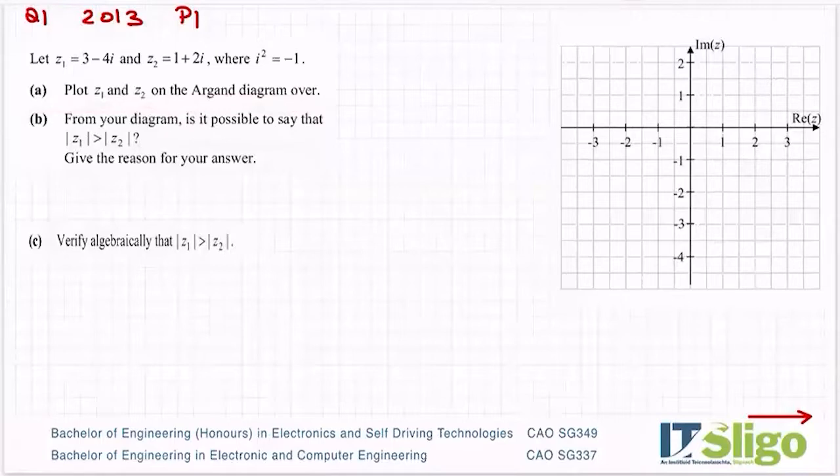So let's plot them. z1 is 3 minus 4i. My real axis, my imaginary axis. So there's my real part - over to 3 on my real axis and down to minus 4 on my imaginary axis. So let me plot that, 3 minus 4. Make sure you always label your complex number, so 3 minus 4i.